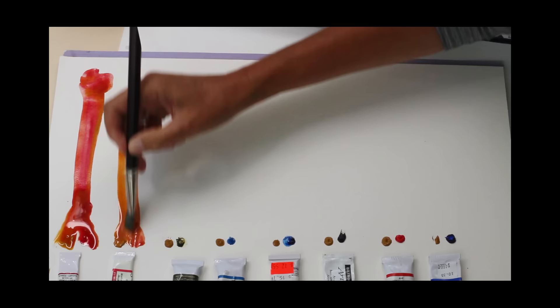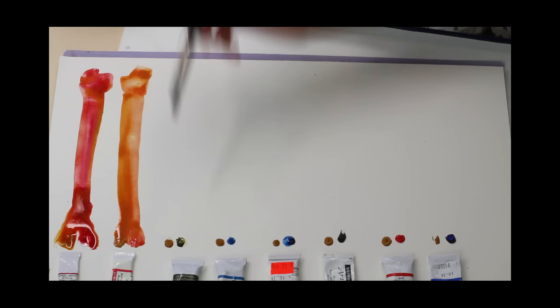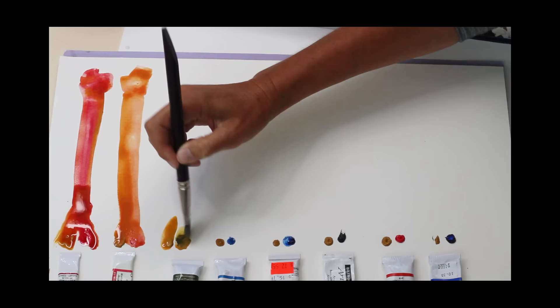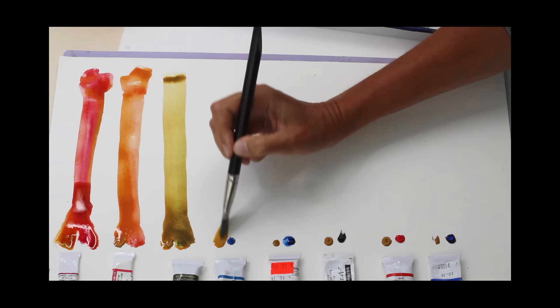The pigment I'm using here is synthetic yellow ochre. This was developed in the 20s and is considered slightly more staining than natural yellow ochre. Natural yellow ochre has a color index PY43. PY in the index stands for pigment yellow. If it says 42, then it's a synthetic yellow ochre. I've used both natural and synthetic yellow ochres, and I don't see too much of a difference between them.